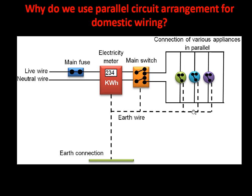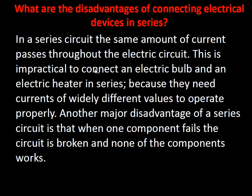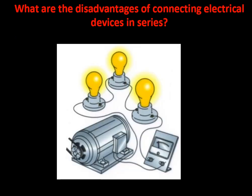In series connection, the current remains the same throughout — some appliances may not receive the required current and could get damaged. To protect devices that need very low current, they should always be connected in parallel. In series, if one device fails, all go off; multiple bulbs connected in series will not glow uniformly, which is a major disadvantage.